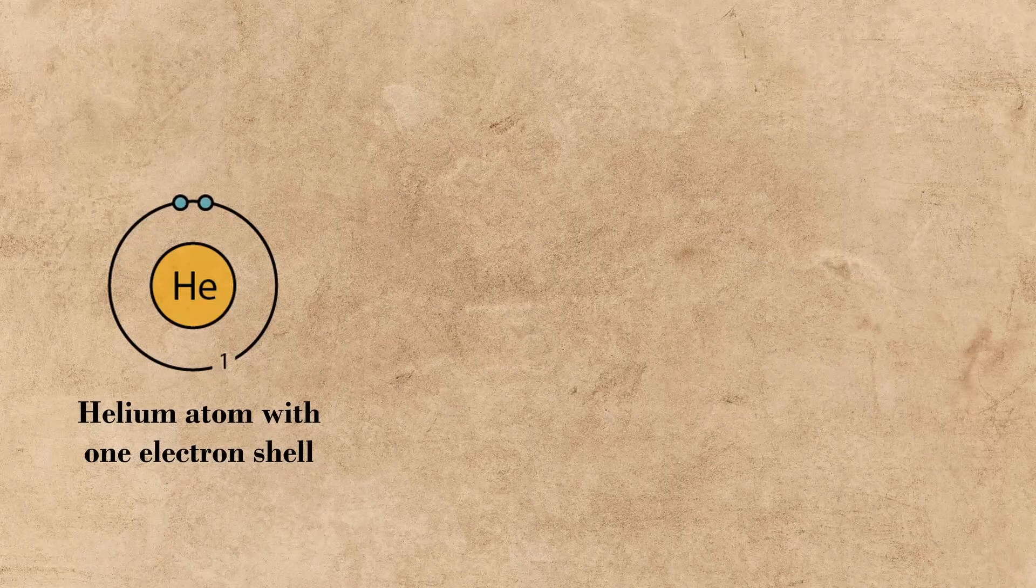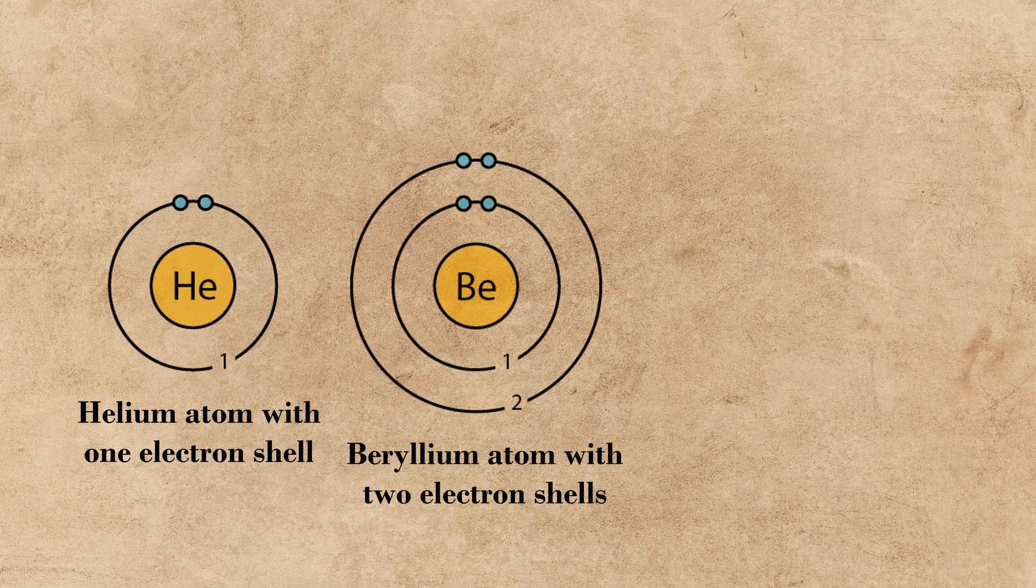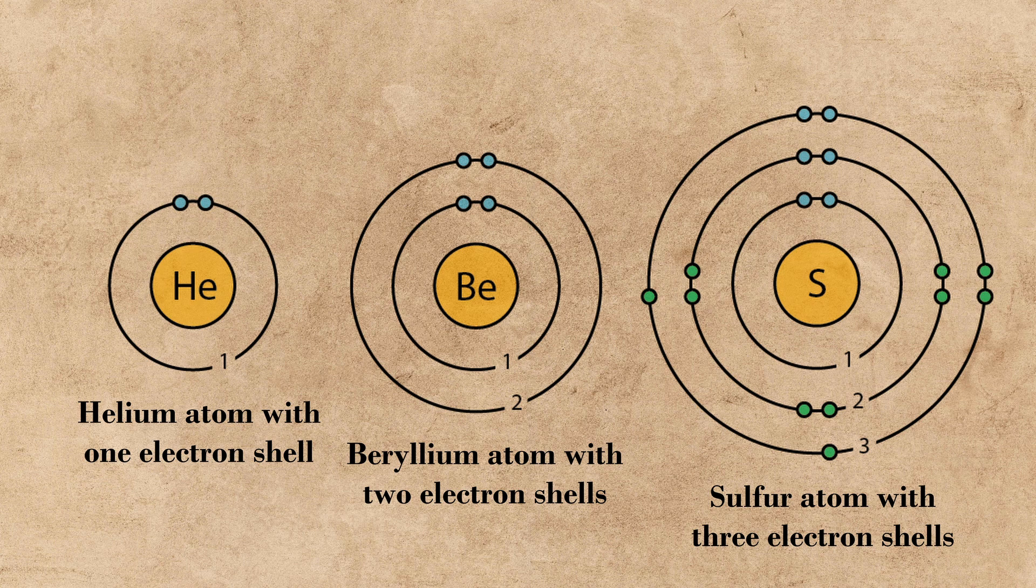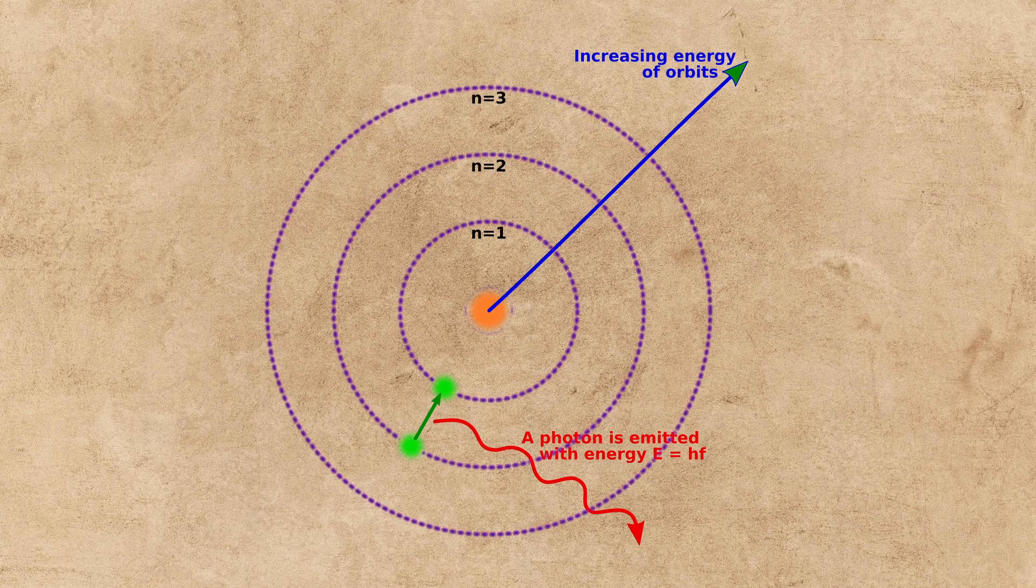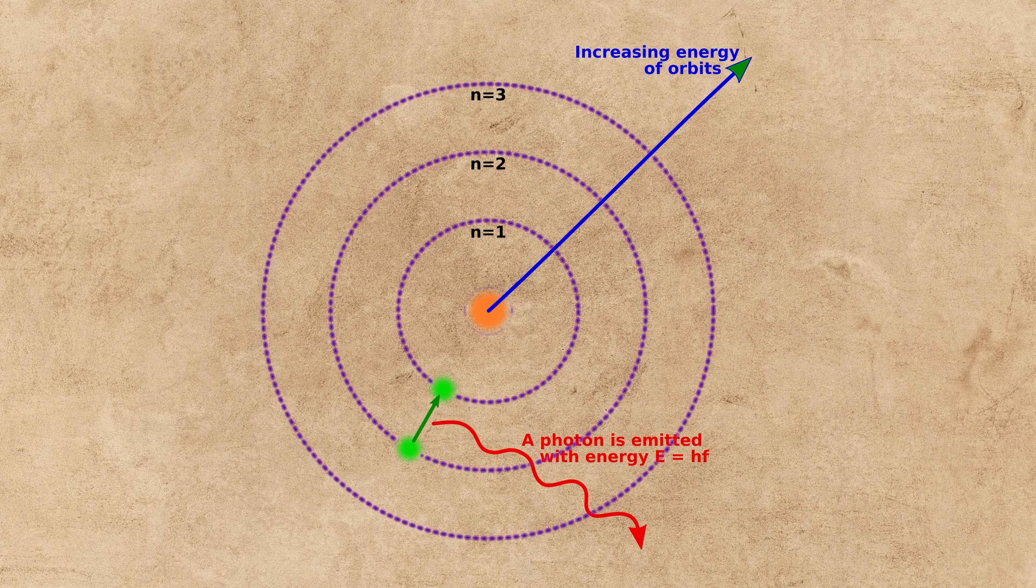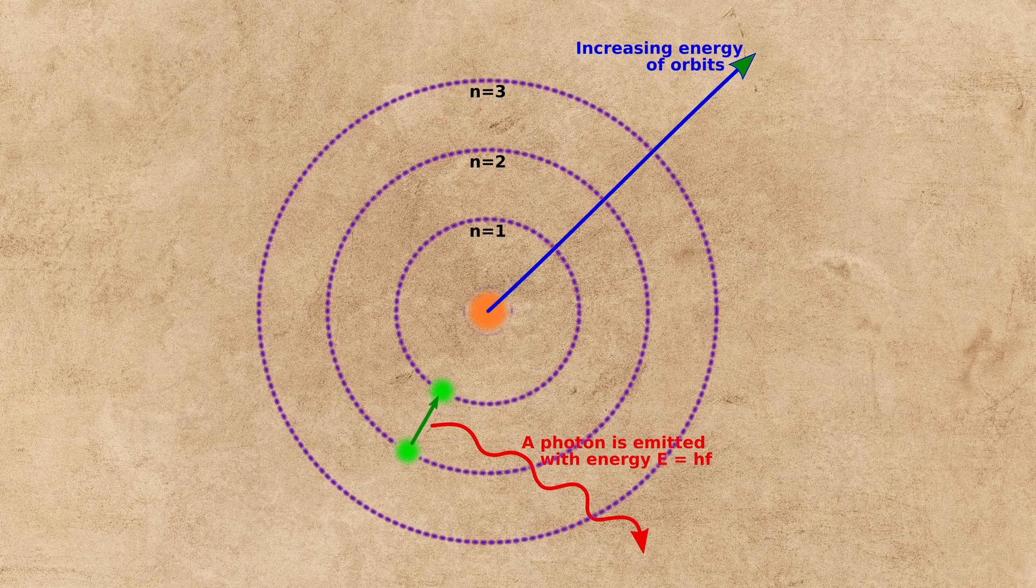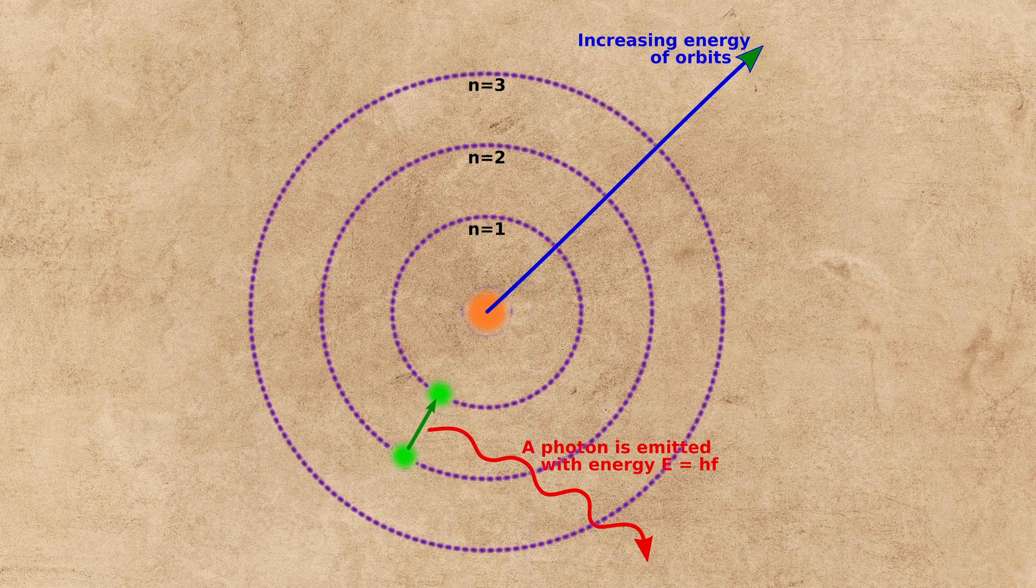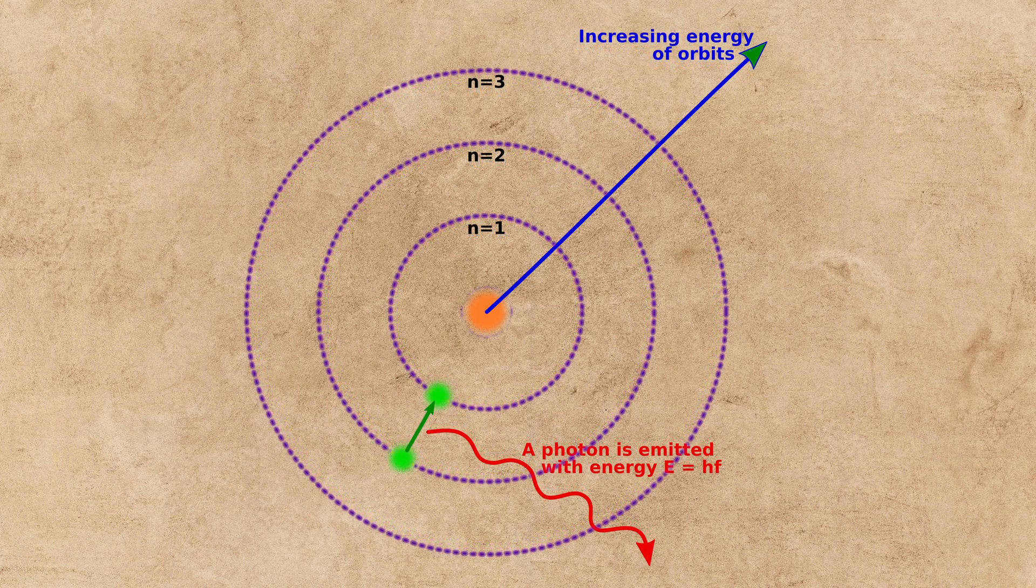Bohr proposed that electrons orbit the nucleus at quantized energy levels. In these energy levels, electrons orbit without radiating energy until a certain threshold is met, and when it is, the electron instantly switches energy levels, releasing excess energy in the form of a photon. Similarly, an electron can move up an energy level when it absorbs enough energy to do so.